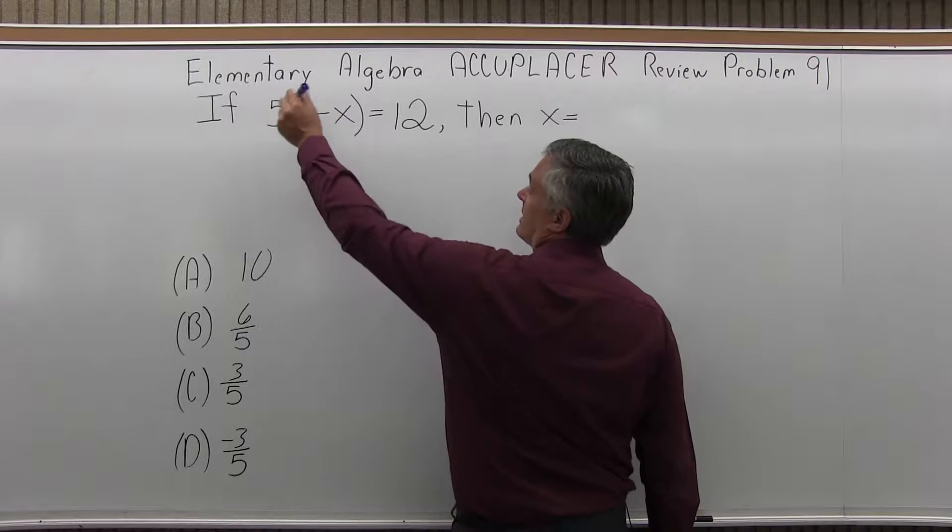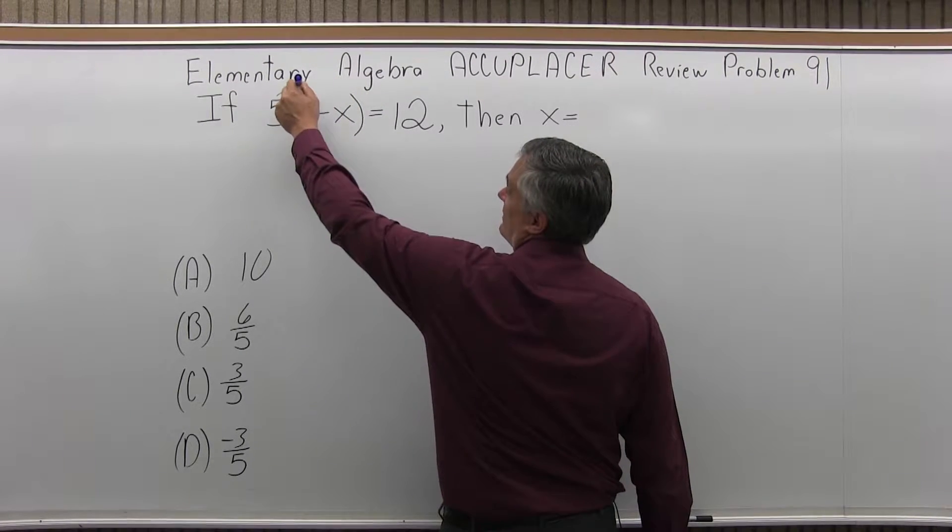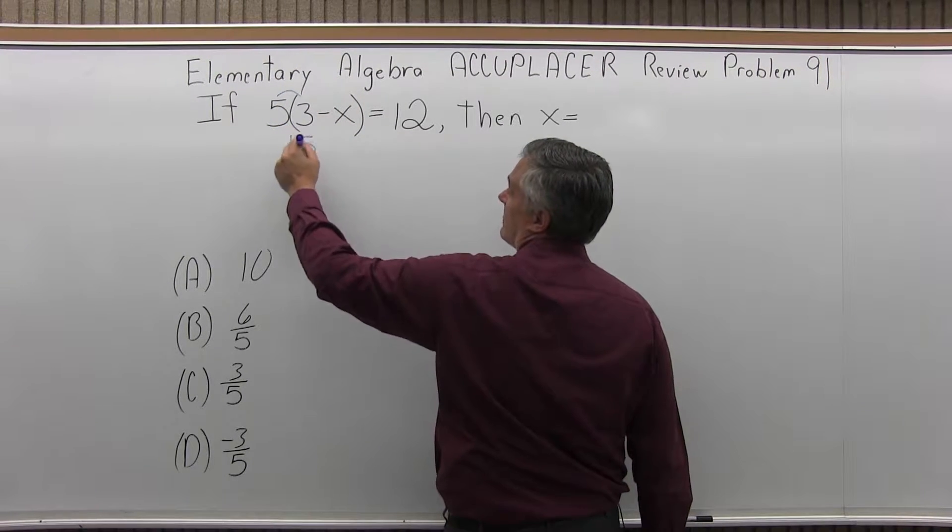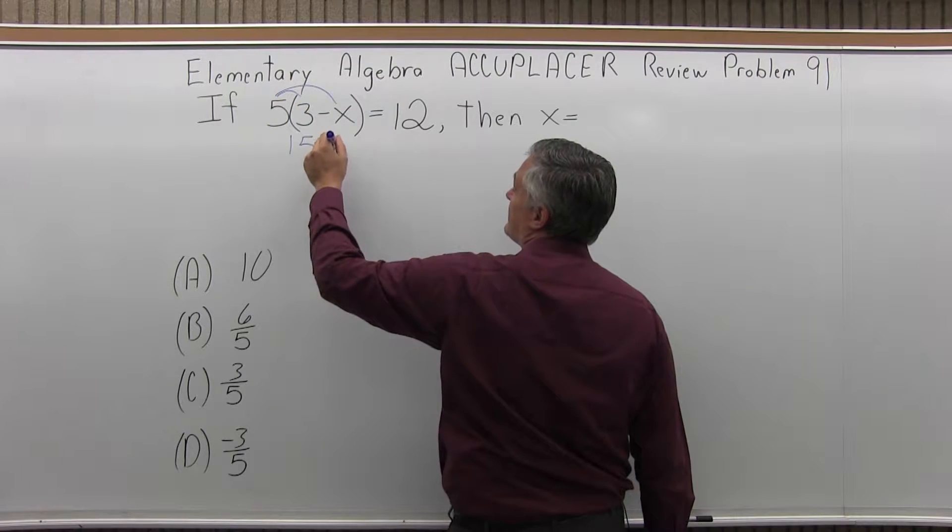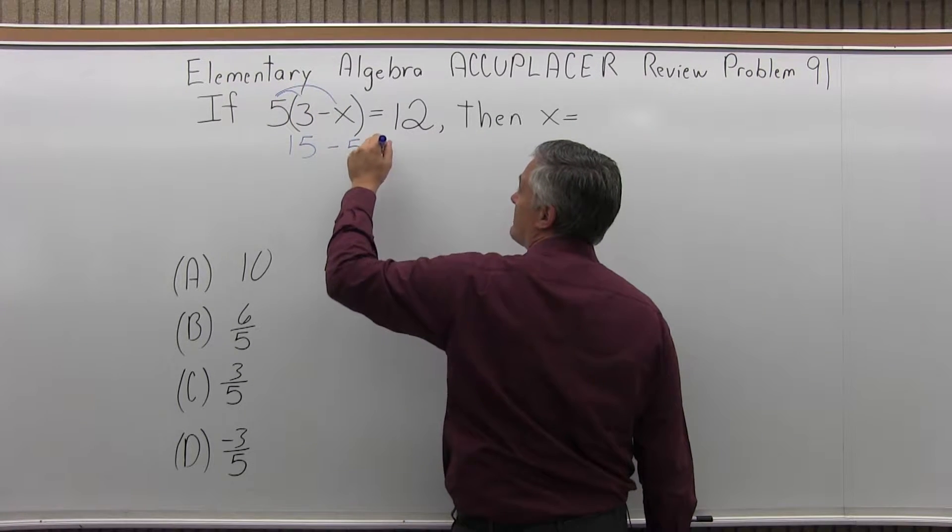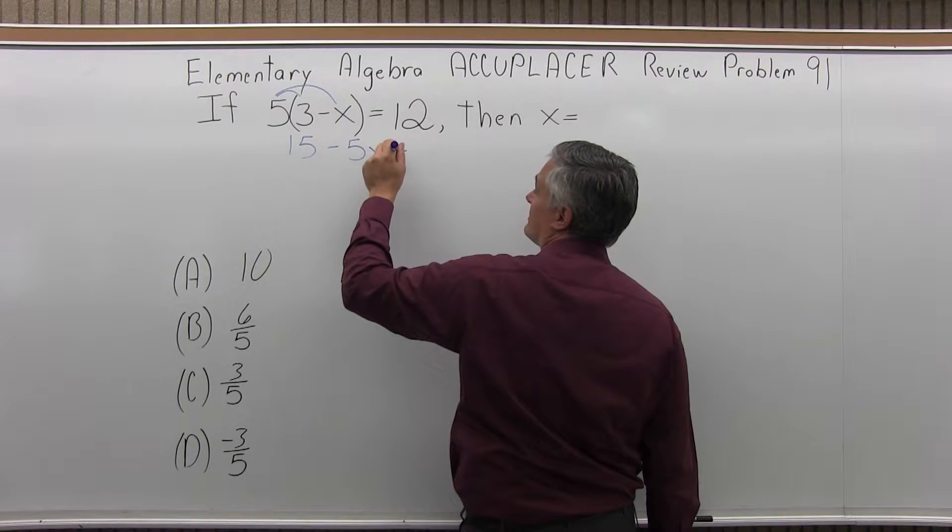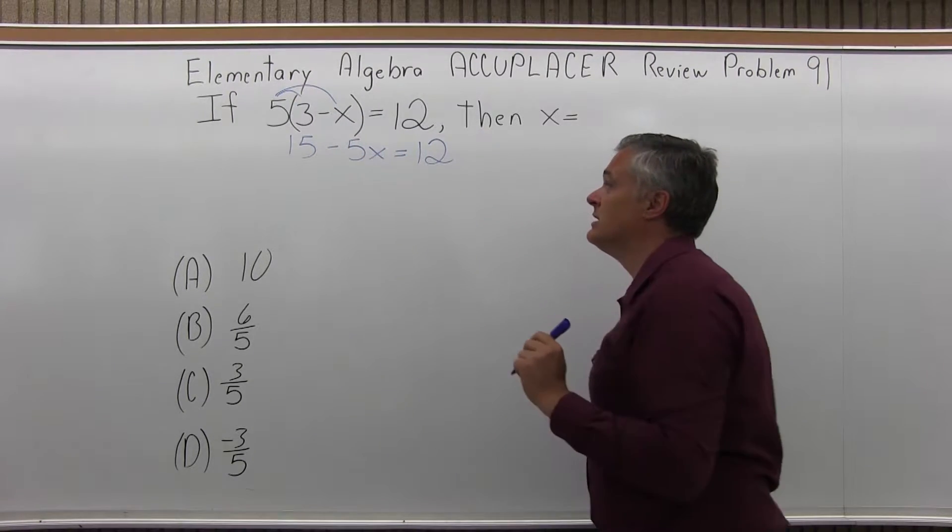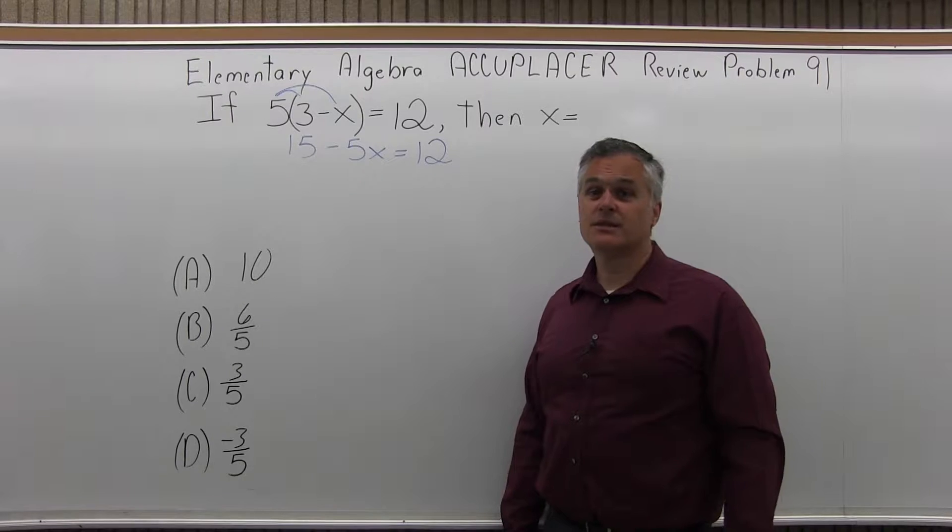So first, I'm going to clear the parentheses. So 5 times 3 is 15. 5 times negative x is negative 5x. Pay attention to the sign. It makes a big difference. And on the right side of the equals, we have 12. So that gets things started.